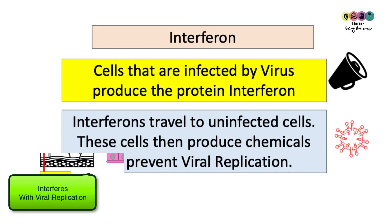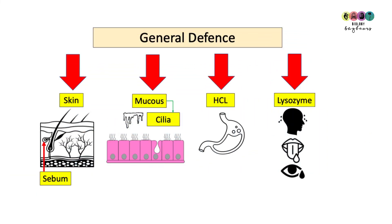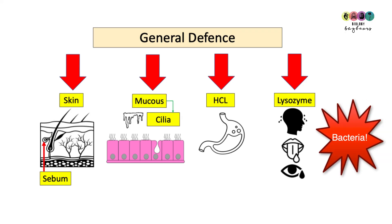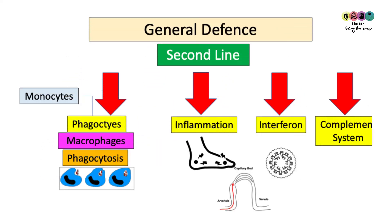This slide summarizes the first line of defense — the barrier system: skin, sebum, mucus, cilia, hydrochloric acid, lysozyme (the enzyme that breaks down bacterial cell walls), the bacteria that produce lactic acid, and the good bacteria in your large intestine.